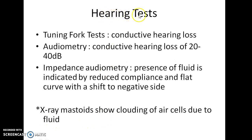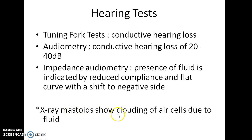Hearing tests in serous otitis media: tuning fork tests show conductive hearing loss. Audiometry shows conductive hearing loss of 20 to 40 decibels. Impedance audiometry is a special test — presence of fluid is indicated by reduced compliance and a flat curve with a shift to the negative side. X-ray mastoids show clouding of air cells due to fluid.